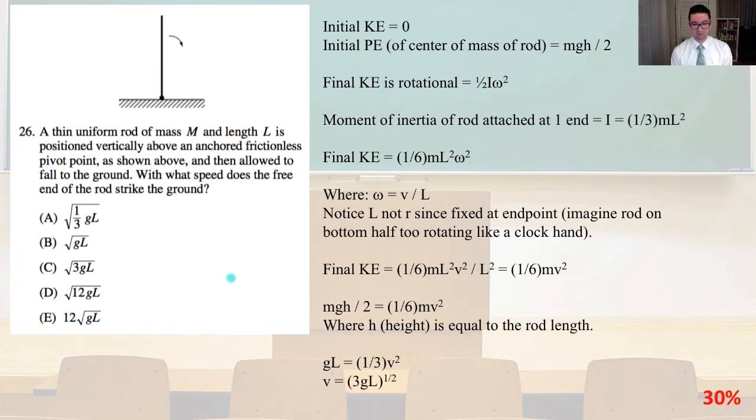Where the moment of inertia of the rod attached to one end i equals 1.3 mL squared, where L is the length. And the final kinetic energy equals, therefore, 1 over 6 mL squared ω squared, where ω equals V over L. Notice L, not R, since fix the end point. Imagine the rod on the bottom half too, rotating like a clock hand. So the final kinetic energy equals 1.6 mL squared ω squared over L squared equals 1 over 6 mV squared. So MGH over 2 equals 1 over 6 mV squared, where H, the height, is equal to the rod length. So GL equals 1.3 V squared, where V then equals the square root of 3GL. And that is answer C.